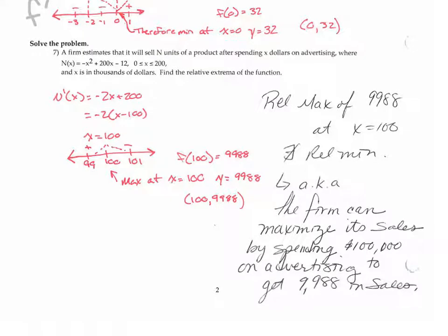For the next one, let me go ahead and add those pieces. This is f prime and this should be at zero. And so we take the derivative, set it equal to zero, factor it. You get just one critical value of 100.